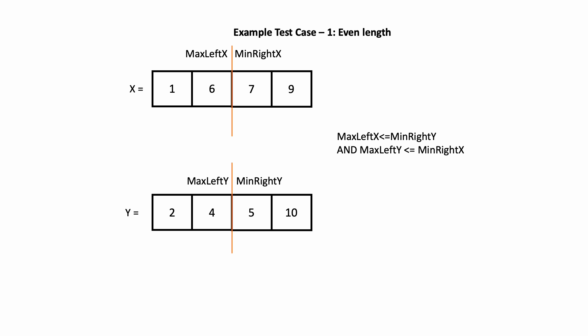Let's start by partitioning the two arrays at the middle index. We check if max_left_x ≤ min_right_y and max_left_y ≤ min_right_x. The condition fails because max_left_x (6) is not less than or equal to min_right_y (5). Whenever this condition fails, we have to move the partitions. We want max_left_x to be smaller to satisfy the condition, so we move the partition to the left side.